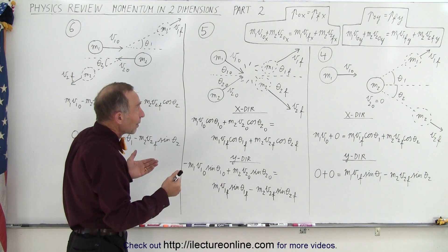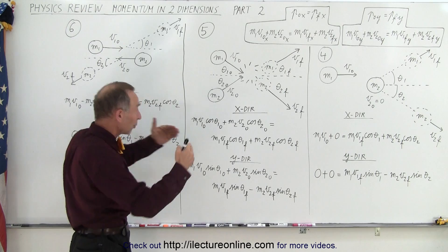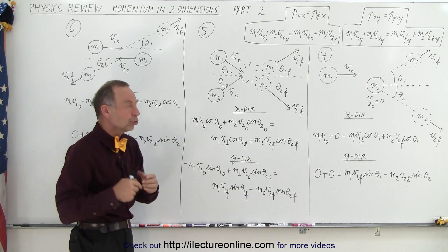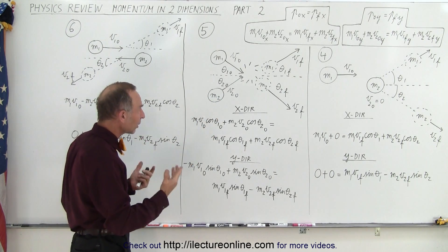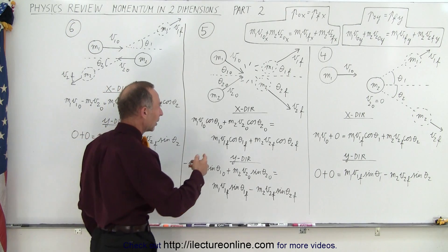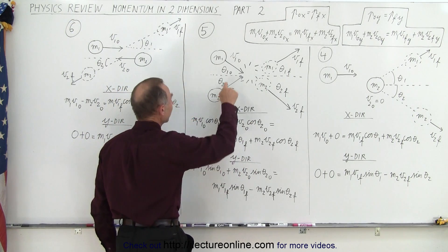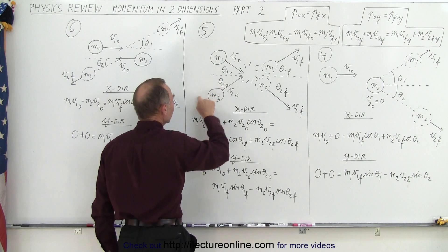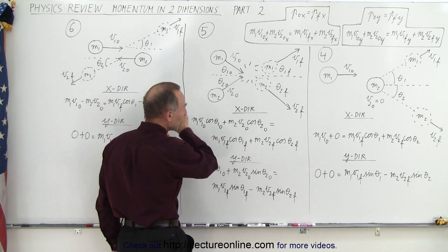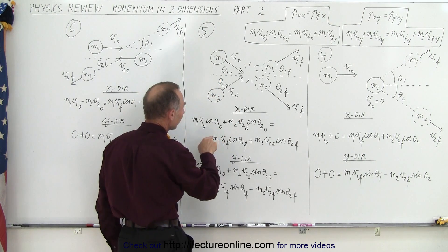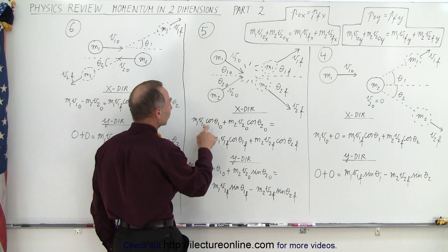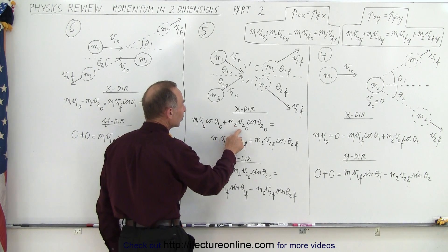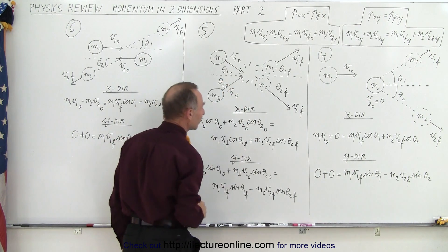But sometimes you have two objects that are moving towards one another, collide, and then move away from each other in two dimensions. So that equation would now become, in the x direction: you take the x components of these two objects moving to the right — they're both positive — so we have M1 V1 initial times the cosine of that angle plus M2 V2 initial times the cosine of the second angle.